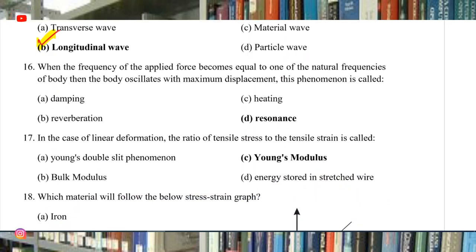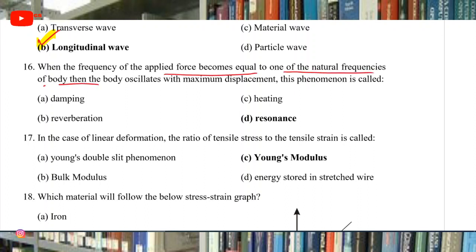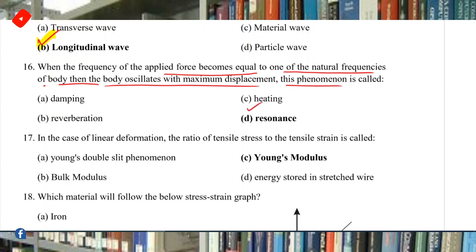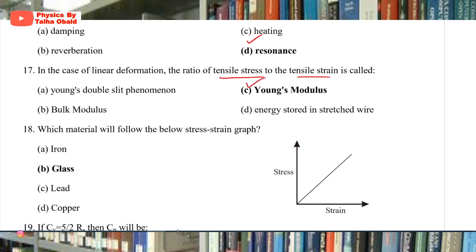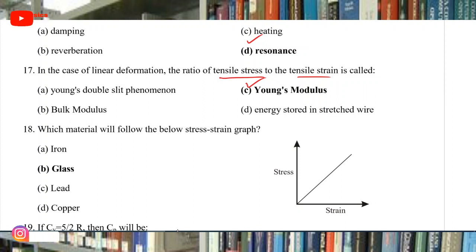Question 16: When the frequency of applied force becomes equal to one of the natural frequencies of the body, the body oscillates with maximum displacement — this phenomenon is called resonance. In linear deformation, the ratio of tensile stress to tensile strain is called Young's modulus. For volumetric deformation, it is bulk modulus. For shape deformation, it is shear modulus.